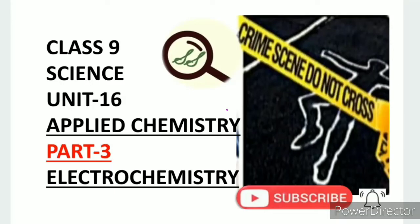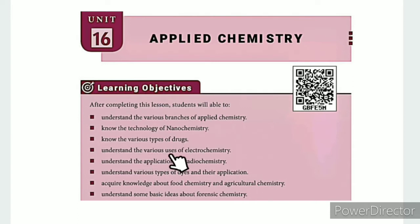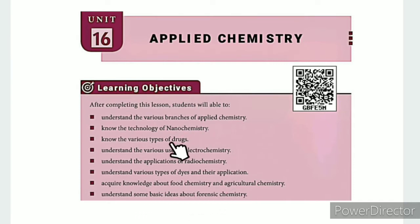Greetings from SS class 9 science unit 16, applied chemistry part 3: electrochemistry. In this lesson, you will learn to understand the various branches of applied chemistry, know the technology of nanochemistry, know the various types of drugs, understand the various uses of electrochemistry, understand the applications of radiochemistry, and understand various types of dyes and their application.